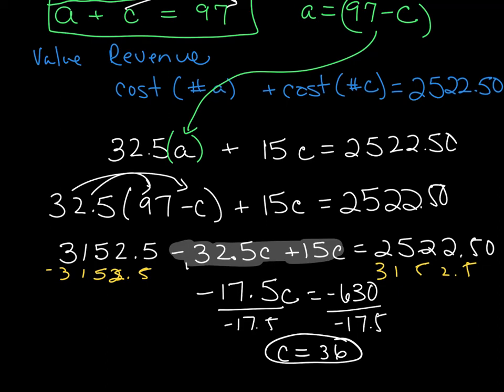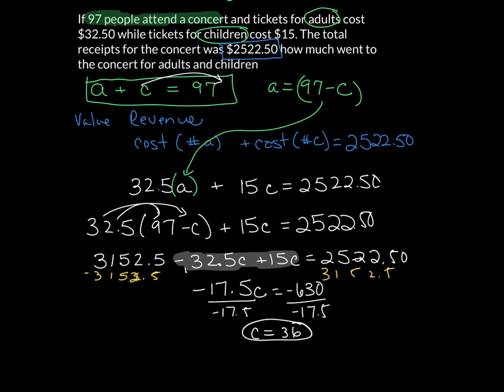Now, to find the number of adults, we go back into our equation we had in the very beginning, which is A plus C equals 97. So I substitute C back inside there, and I get the fact that A is equal to 97 minus 36, or that the number of adults is equal to 61. And those are my two answers.